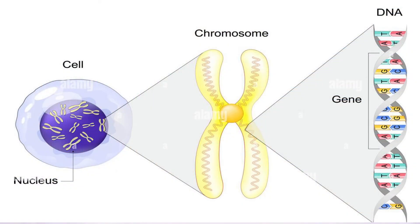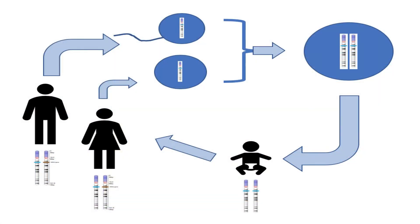In every cell we have 46 chromosomes. Each chromosome is nothing but a condensed form of DNA in which there are thousands and thousands of genes which perform our bodily functions. We have 46 chromosomes in each cell — 23 come from the mother and 23 come from the father.